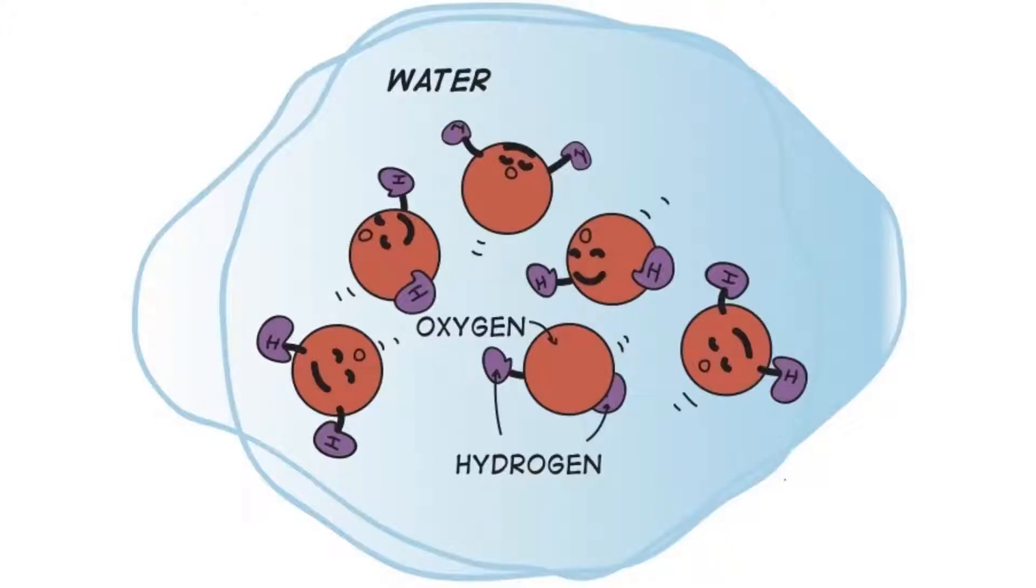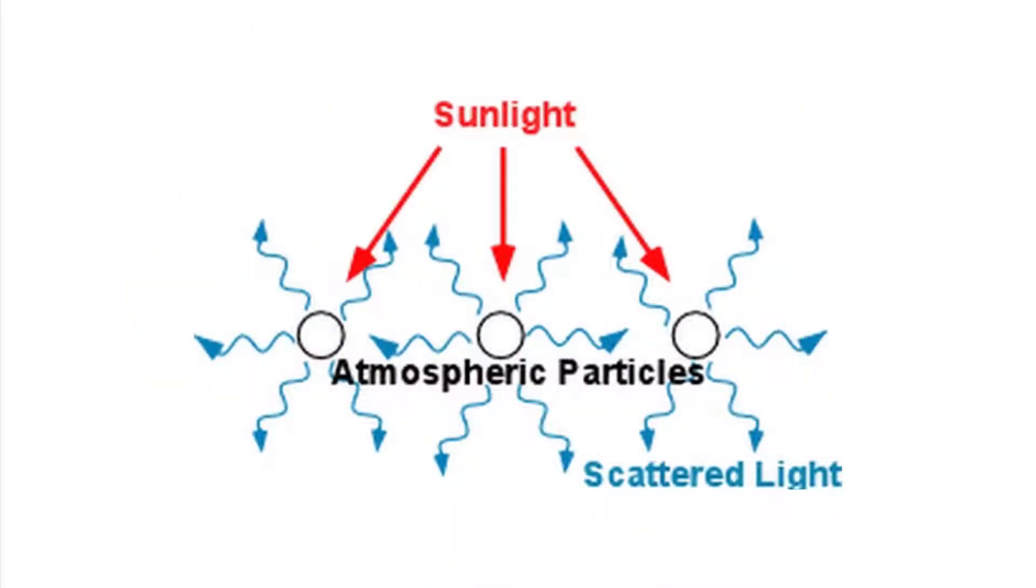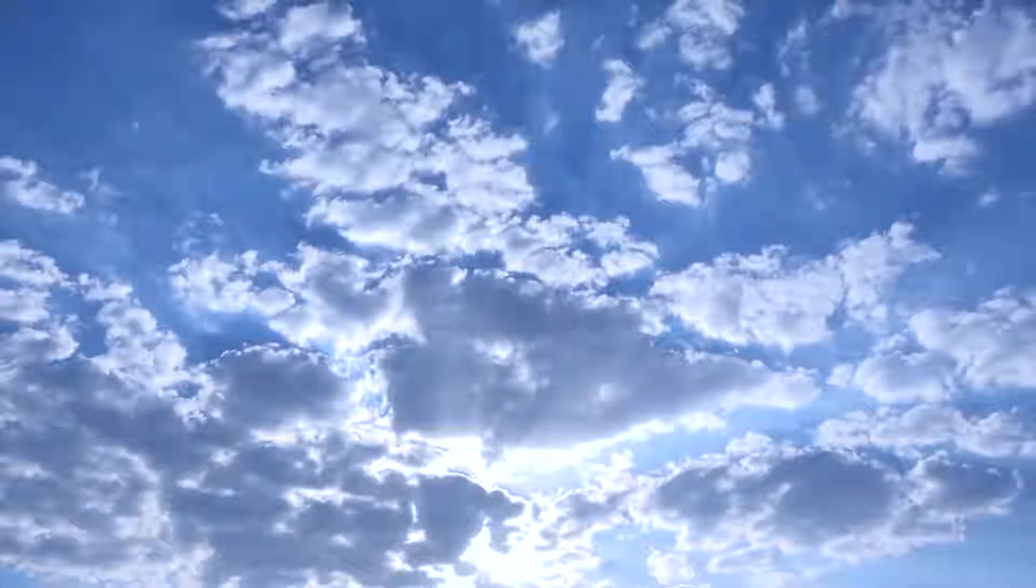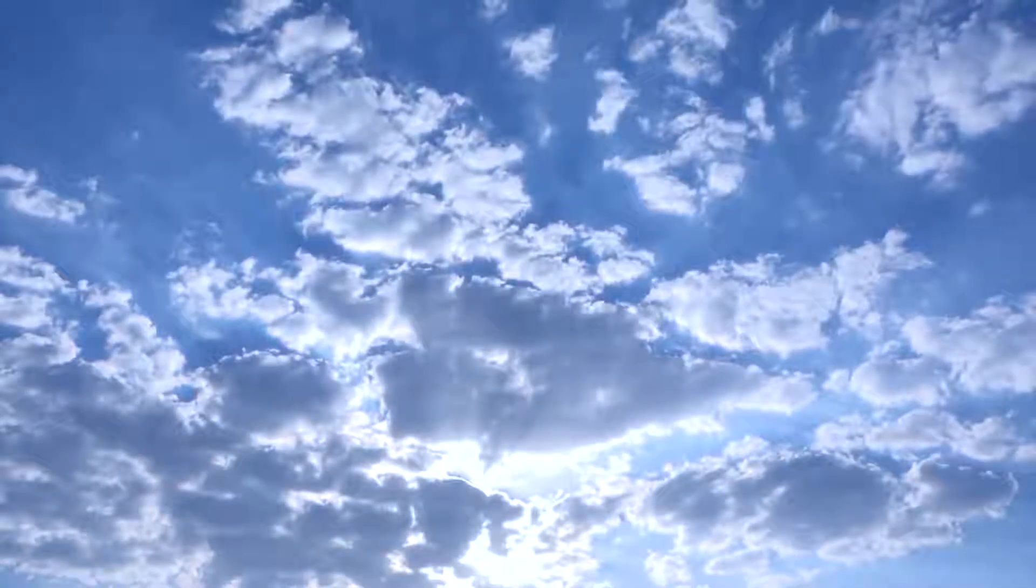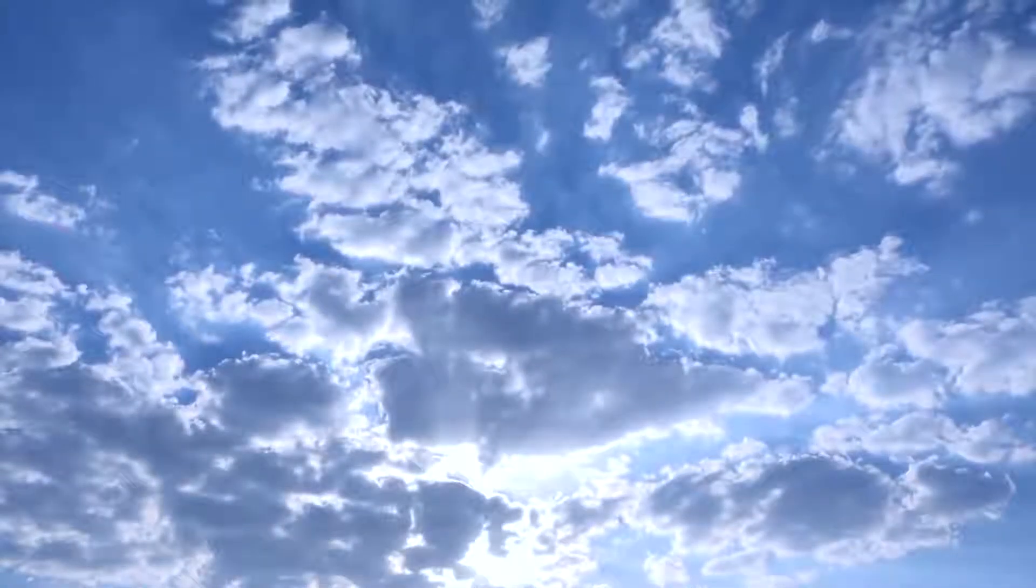But why do the clouds appear white? Clouds are made of water vapor. Water vapor consists of large water molecules that scatter all colors. We see these colors mixed together as white color, and the clouds appear white.